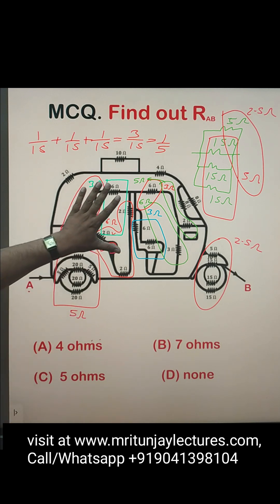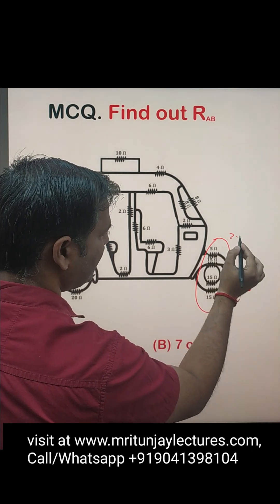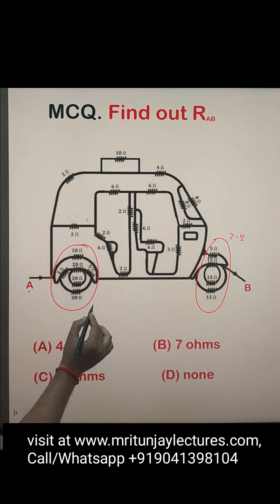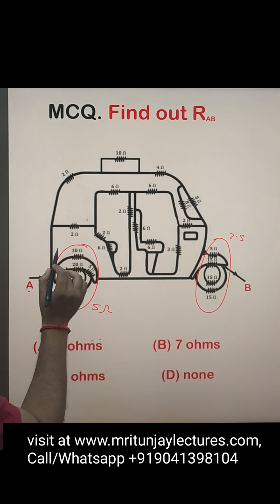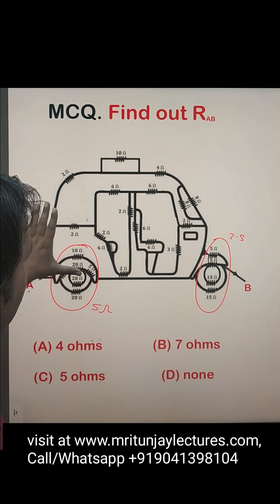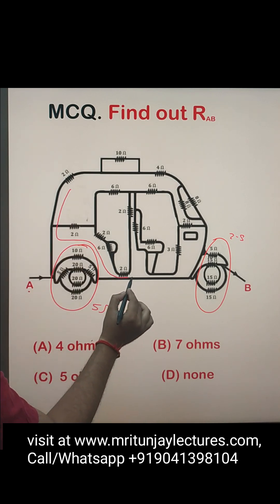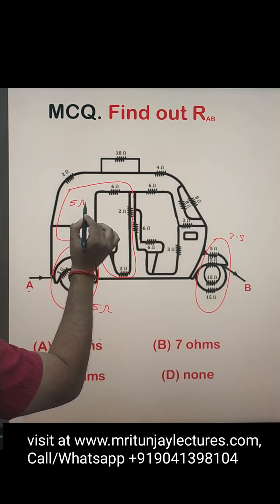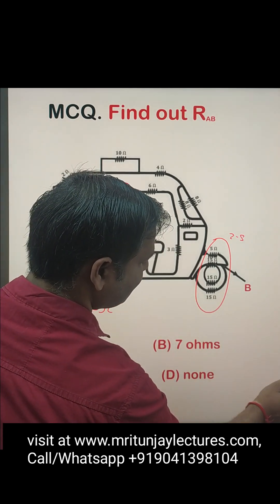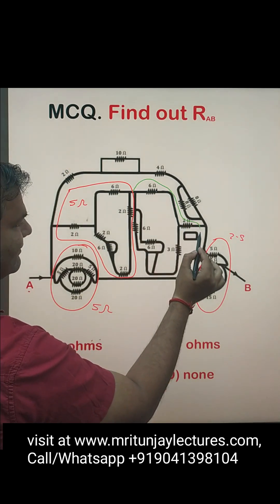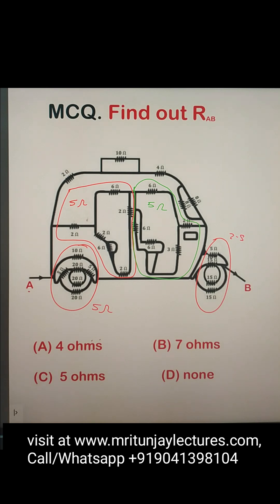So we have 5Ω, 5Ω, 5Ω, 5Ω, and 2.5Ω. That one is 2.5Ω, that one is 5Ω, and those 5Ω combinations — the combination of that section is also 5Ω. I have already obtained 5Ω for that part, and the combination of that section is 5Ω.